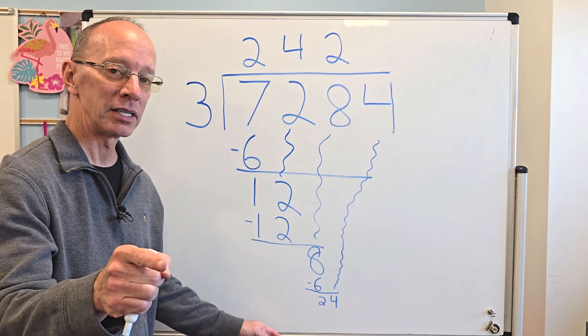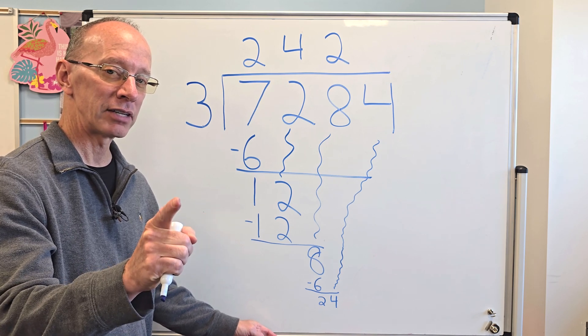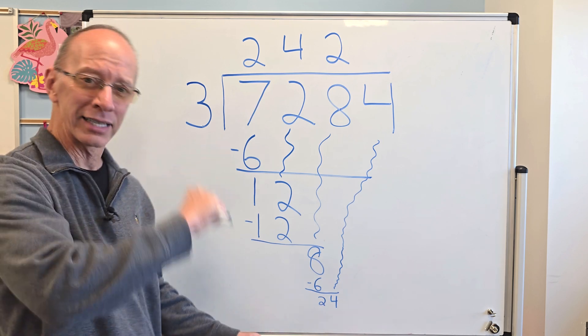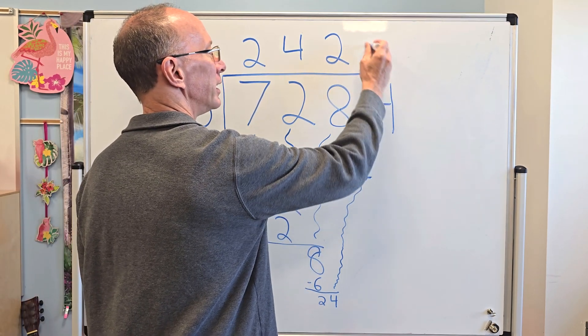All right. So how many times can I put 3 into 24? 3 times 5 is 15. 3 times 6 is 18. 3 times 7 is 21. 3 times 8, oh, I think that's it, 24. All right. So we put the 8 right here.